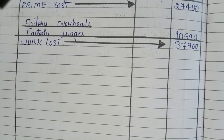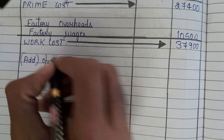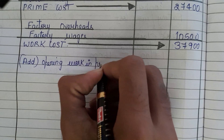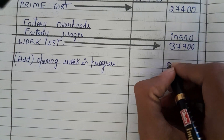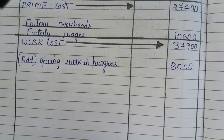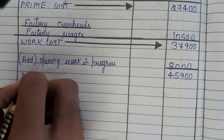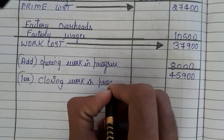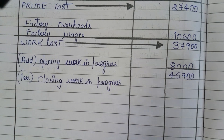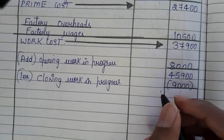Next we need to add opening work in progress and subtract closing work in progress. Opening work in progress is 8,000. Adding 8,000 to 37,900 gives 45,900. From this we subtract closing work in progress of 9,000, giving us 36,900.